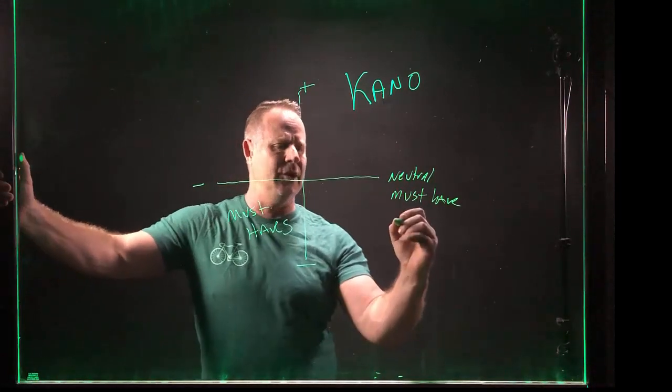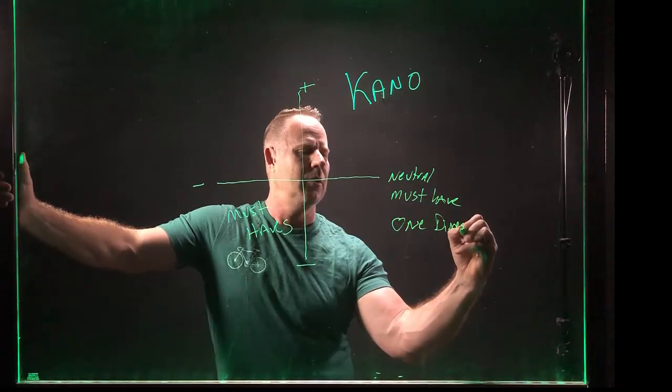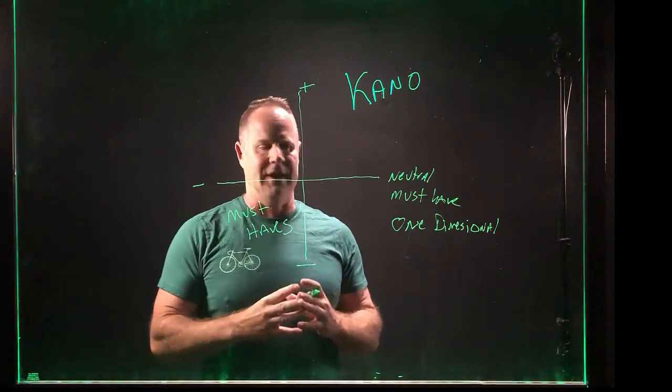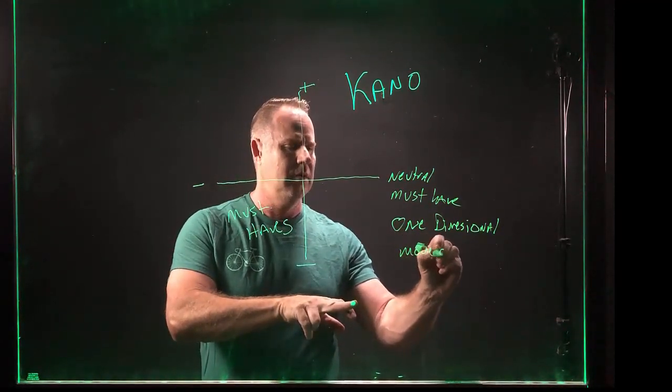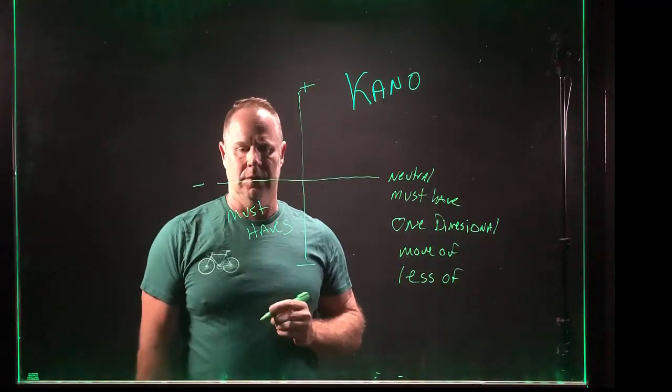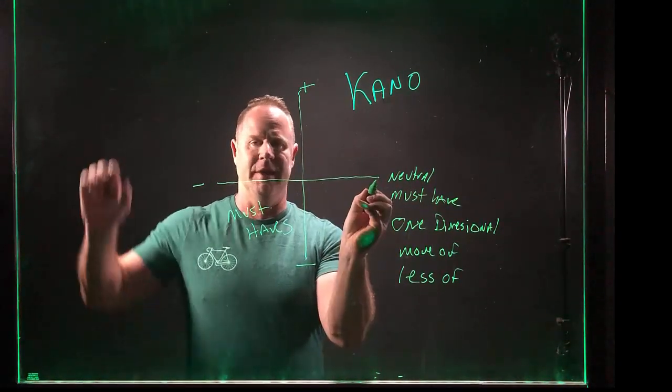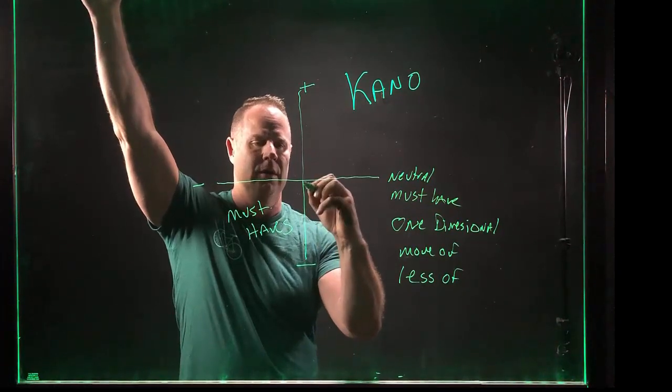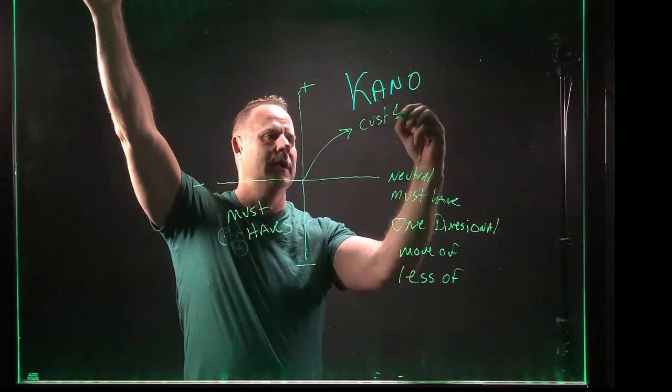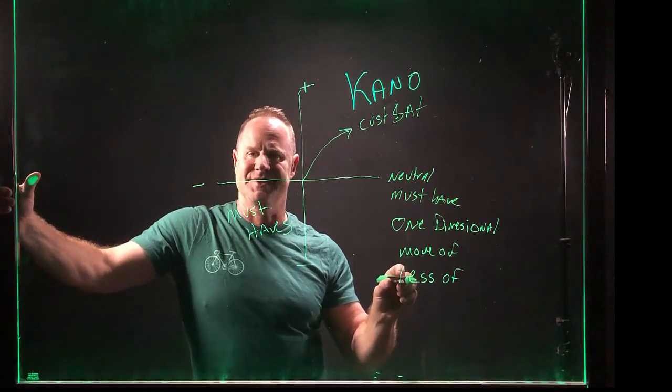So then Kano said there are these things called one-dimensionals. And basically those are things where more of or less of is better. So for example, when they run together, brakes on a car is a must-have. Providing brakes makes me neutral. However, you begin to get over into the customer satisfaction category by providing less stopping distance.